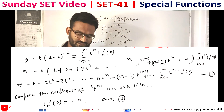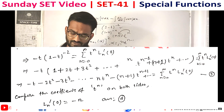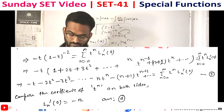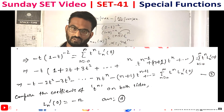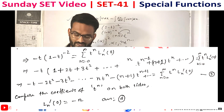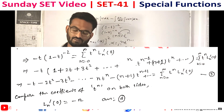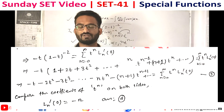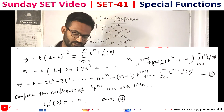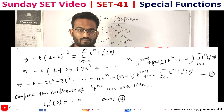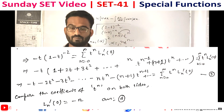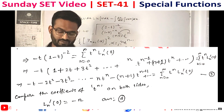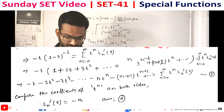Comparing the coefficients of t^n on both sides, we get Ln'(0) = −n, which matches option D. So option D is the correct answer for this problem.